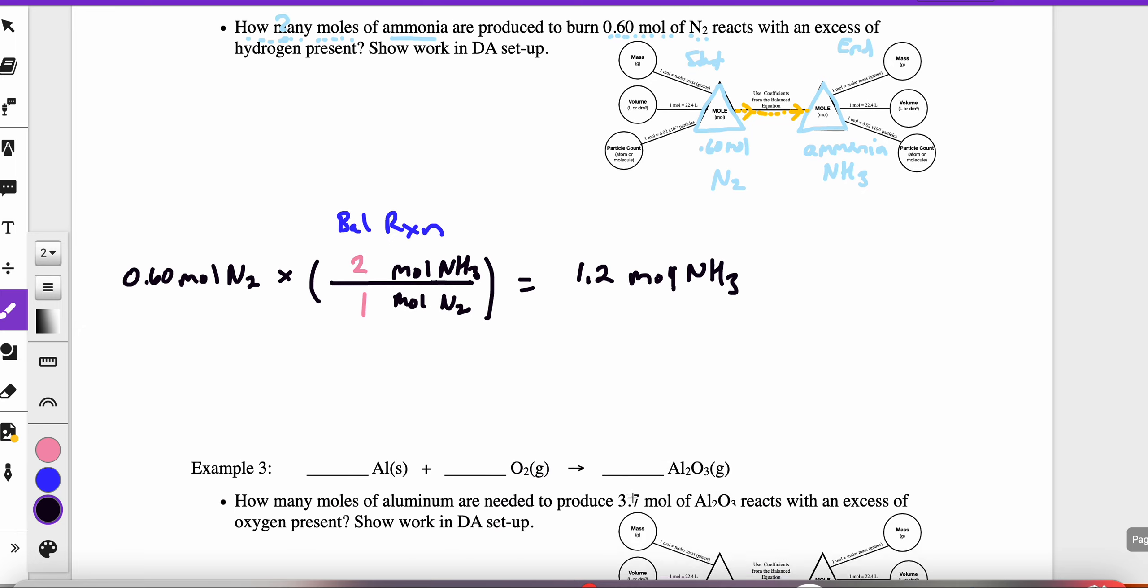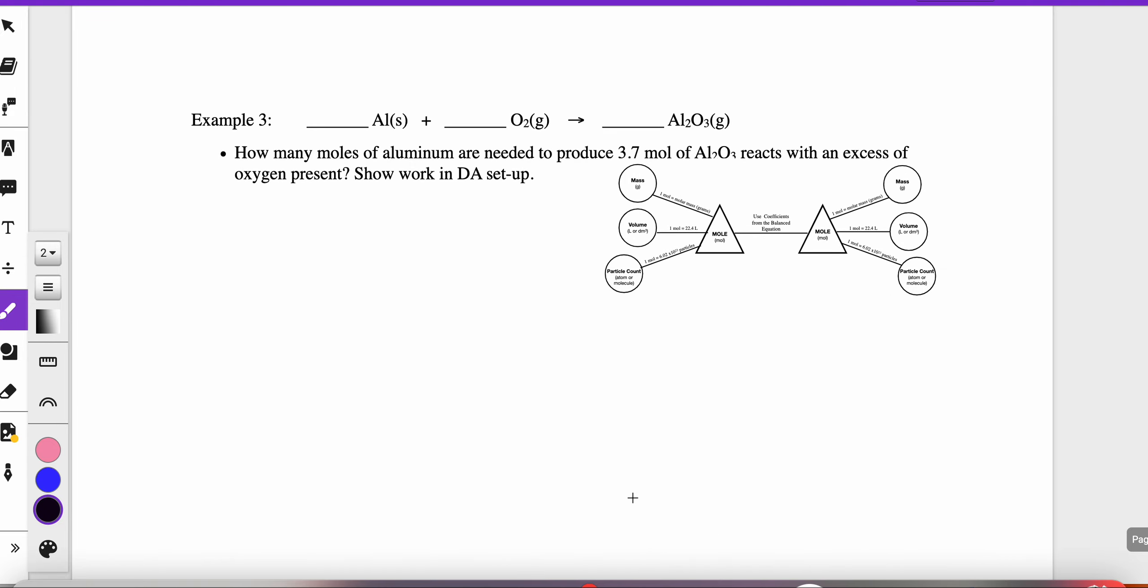One more example, example three. So I'm a creature of habit. So I like to start each process the same way. So I read through and it says in this process, it says how many, which is my clue that that's what I'm solving for. Moles. And so I need to go to the right side of my diagram and I'm going to outline. This is where I need to get to mathematically. And it says moles of aluminum. So I'm going to write aluminum.